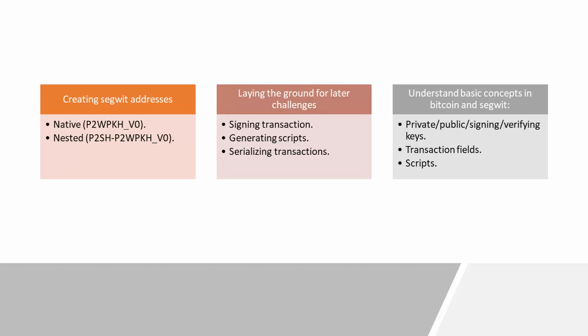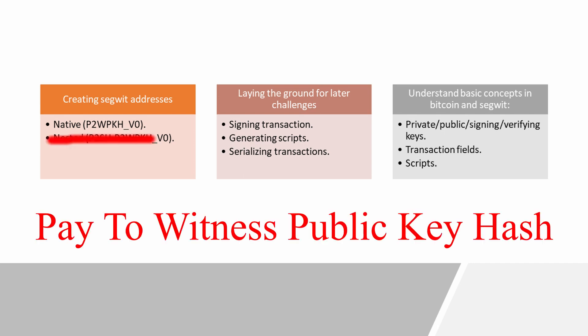Now, as you might already know, there are two types of segwit addresses. The first one is the native segwit address, and it is also known as the pay-to-witness public key hash.